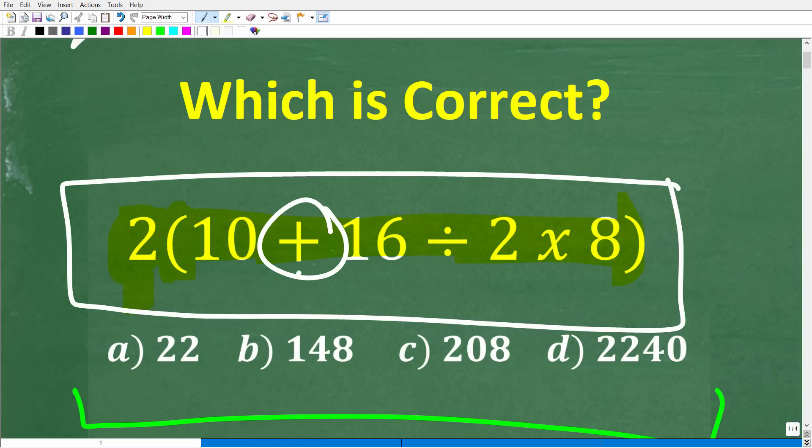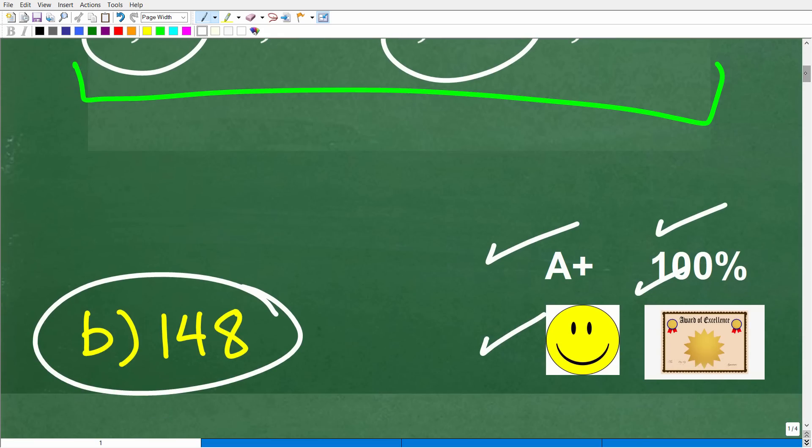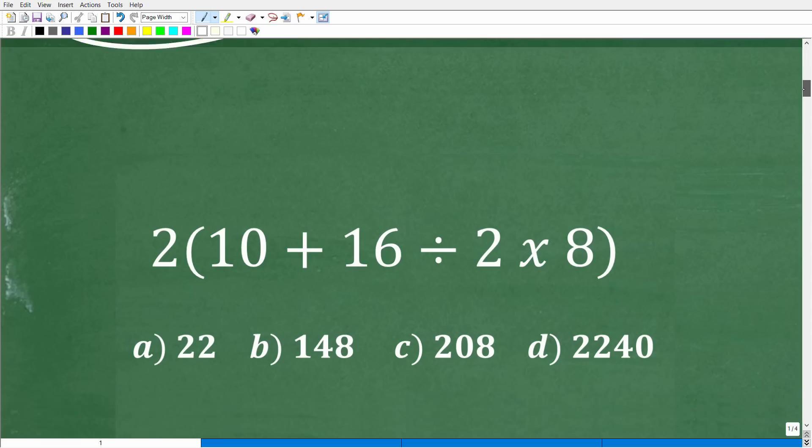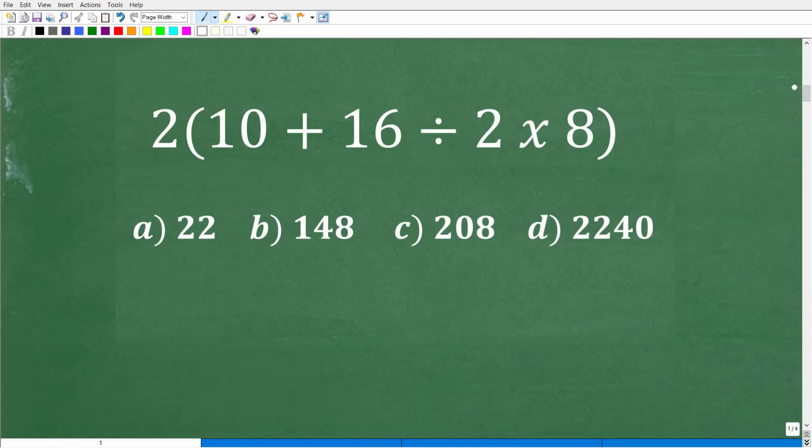And these things right here in math, like an addition symbol, this right here is division, this is multiplication. These are what we call mathematical operations. And if you didn't get this problem right, that just means that you took the wrong order. That's not a big deal. It is a very common misunderstanding in math, but it's easy to fix.